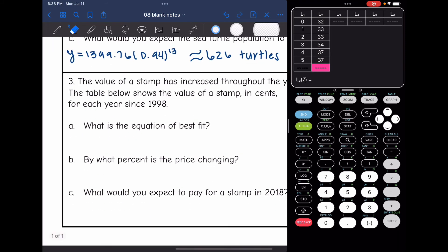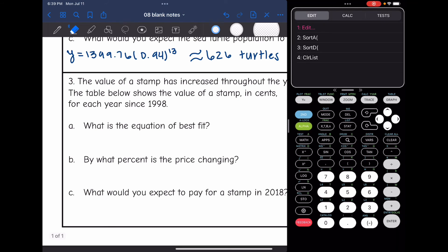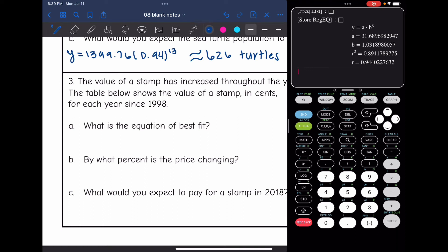And now I want the equation of best fit. So I'm going to do exponential regression by going to stat, arrowing over to calc, and going down to zero. And I get the A value is 31.689, so that would round to 31.69. So it's going to be Y equals 31.69 times the B value is 1.03 to the X.